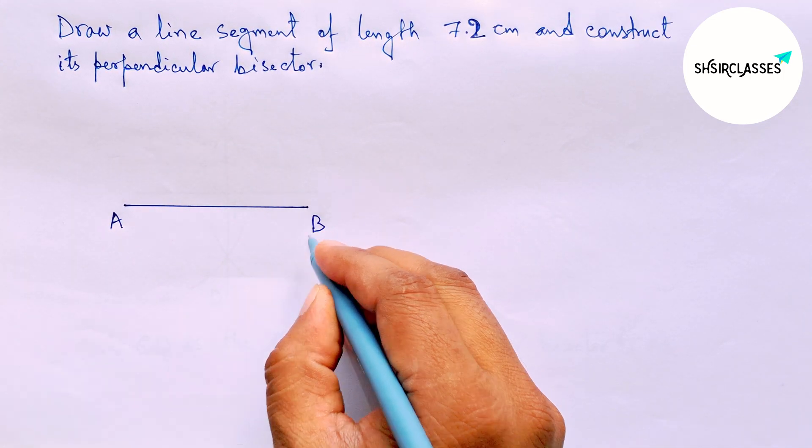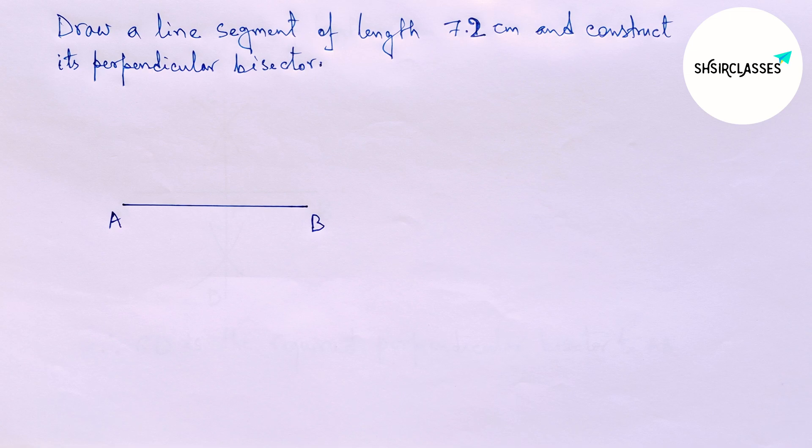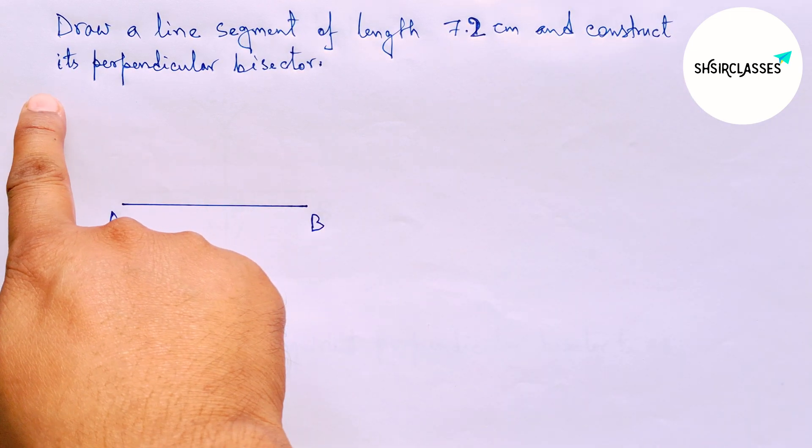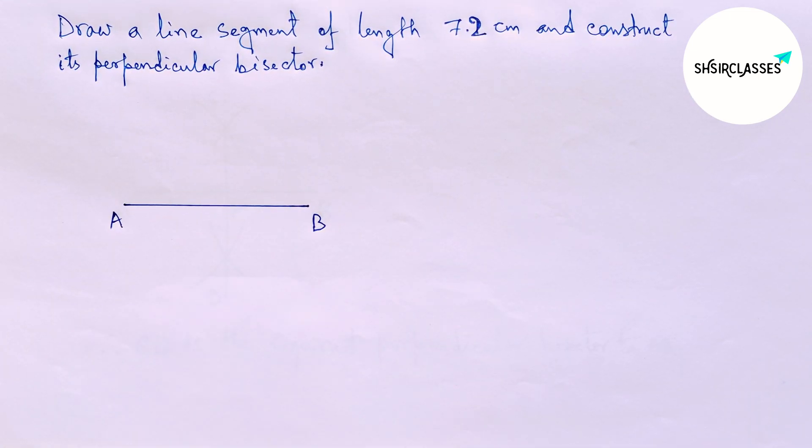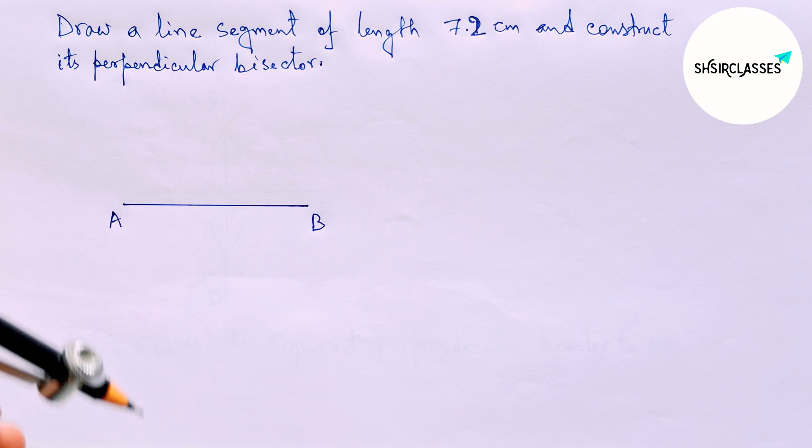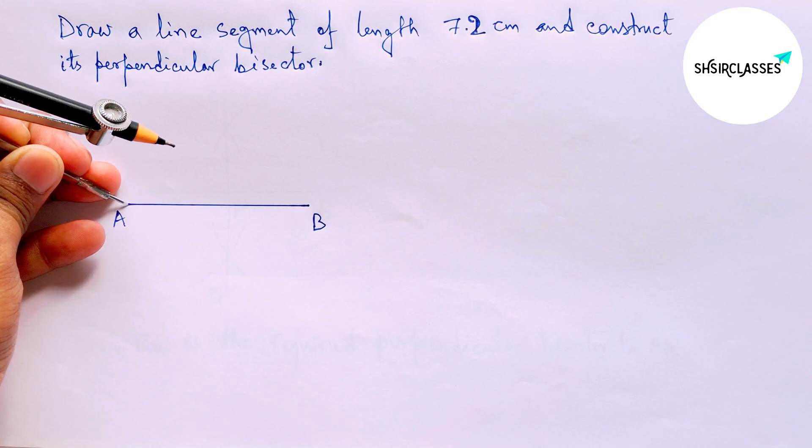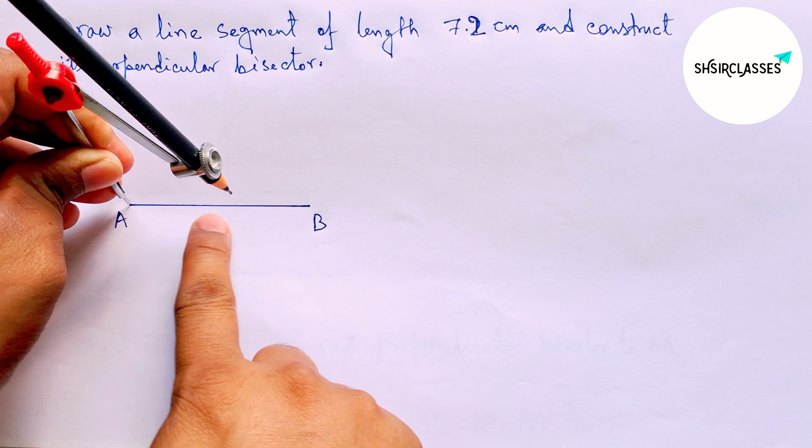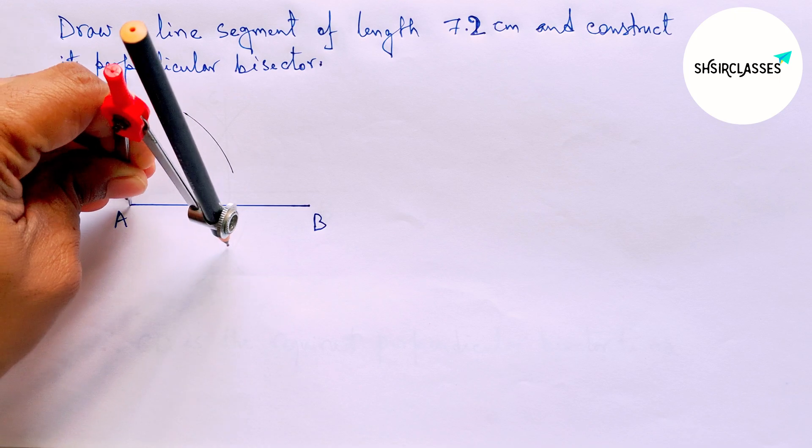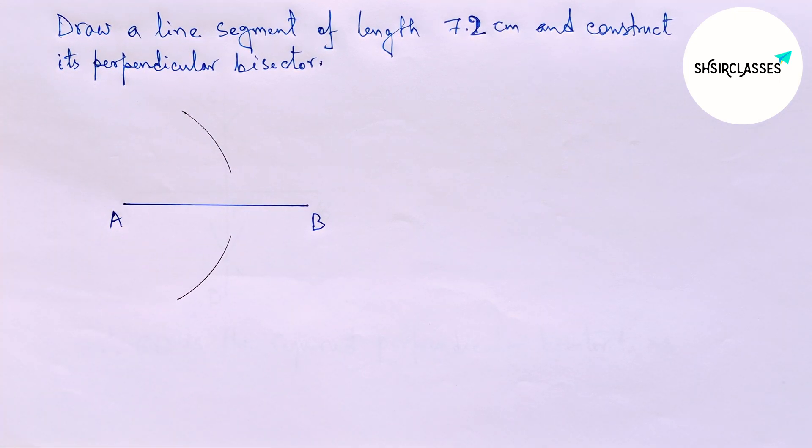Next, construct its perpendicular bisector to the line AB with the help of a compass. Put the compass on point A and take a radius greater than half of AB, and draw an arc by this way.